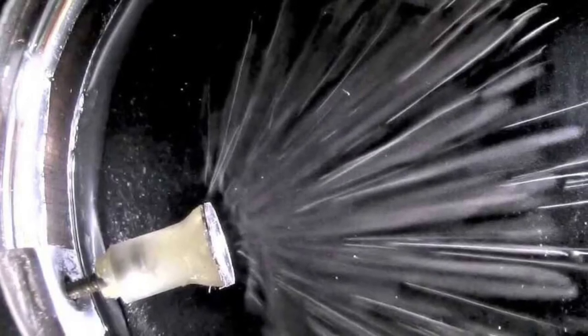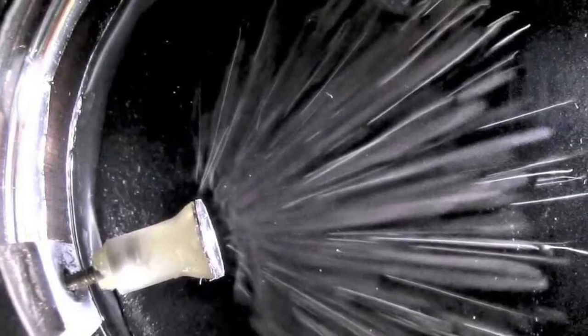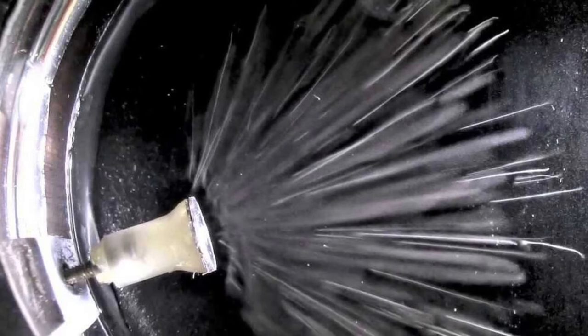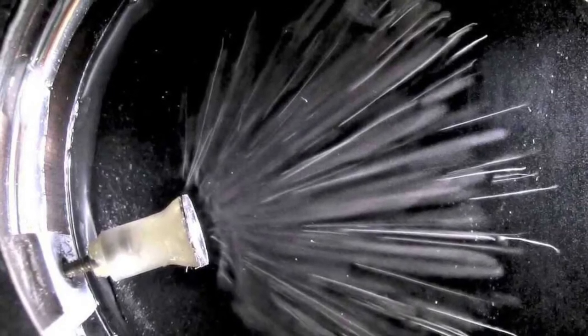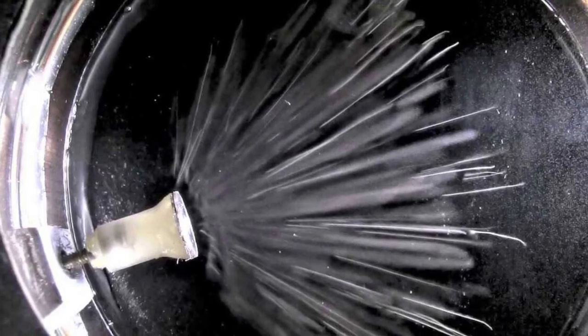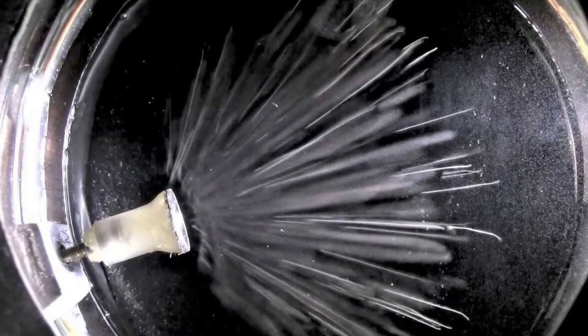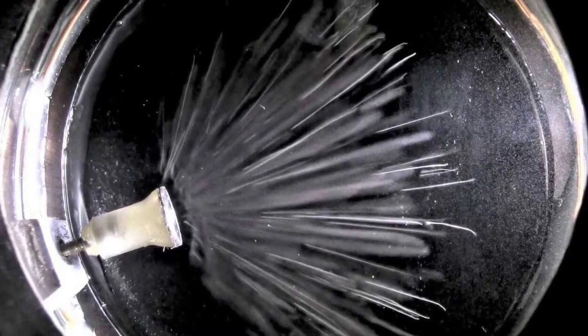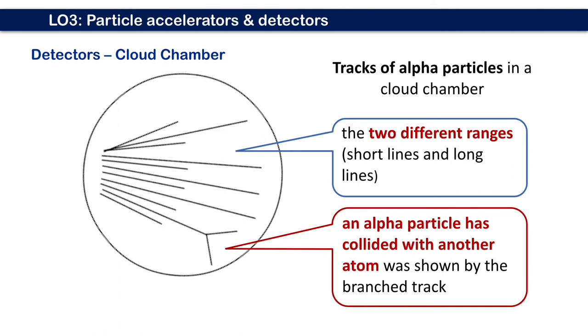Alpha particles typically leave long straight paths. Their range in the air is determined by their kinetic energy. Sometimes the particle collides with a particle of the gases, resulting in an elastic collision. In this case, the track of the two particles is determined by the law of conservation of kinetic energy and conservation of momentum. Figure shows typical tracks of alpha particles in a cloud chamber. There are alpha particles with two different energies being emitted by the source, as shown by the two different ranges displayed by the short and long lines, and an alpha particle has collided with another atom as shown by the branched track.